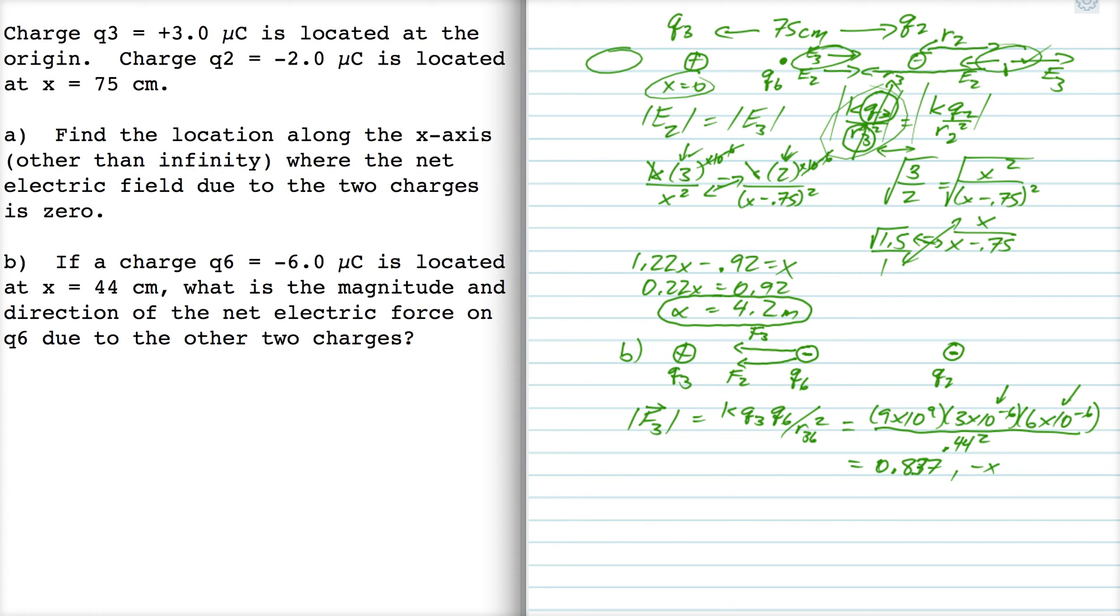Now we're going to find F2. So that's k, q2, q6, over r26 squared. So I'll write out all my numbers. The distance—since the difference, since they're 75 centimeters apart, and we're 44 centimeters away from q3, we must be 31 centimeters away from q2, because 44 and 31 add up to 75. So this works out to be 1.124, also in the minus x direction.